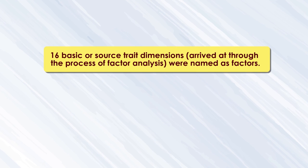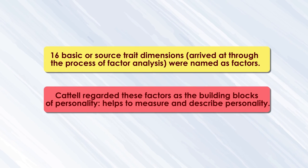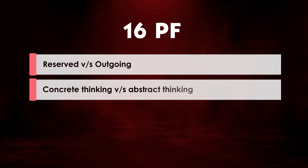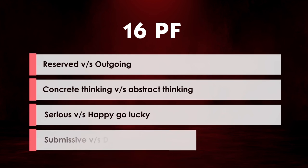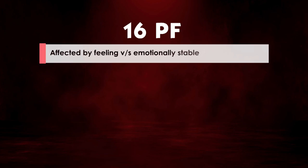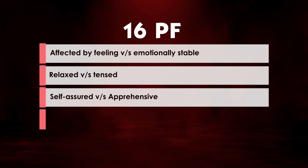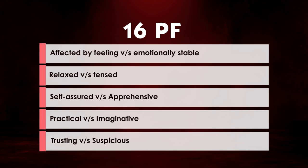These 16 basic or source trait dimensions arrived at through factor analysis were also named as factors, and on the basis of these 16 source traits, Cattell gave us the 16 PF personality test. He regarded these factors as the building blocks of personality — they help measure and predict personality. Some of the 16 PF dimensions are: reserved versus outgoing, concrete thinking versus abstract thinking, serious versus happy-go-lucky, submissive versus dominant, affected by feeling versus emotionally stable, relaxed versus tensed, self-assured versus apprehensive, practical versus imaginative, and trusting versus suspicious.